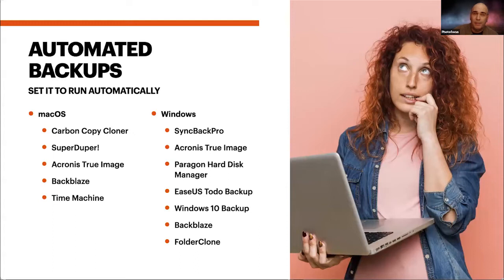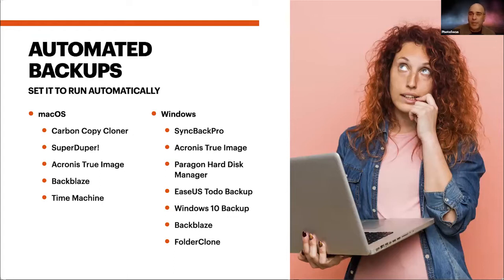Let's talk about automation. The problem with most backup services is they're not automated — if they're not automated, you have to remember to run them, which is where human error comes in. I use an automated service. On my Macs, I use Carbon Copy Cloner, but any of these tools will work: SuperDuper, Acronis, Backblaze, Time Machine — they're all a type of backup. On the Windows side, Sync Back Pro is one I recommend. These tools allow you to schedule your backups. My backups run nightly, and with my laptop, whenever I plug in my backup drive, it runs automatically.